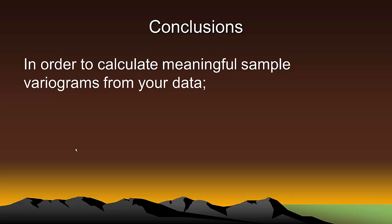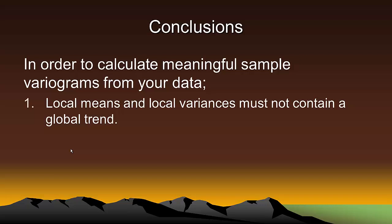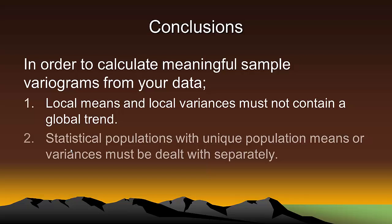So let's conclude this video then with a couple of points. In order to calculate meaningful sample variograms from your sample data, the local means and local variances must not contain a global trend. And two, any mixture of statistical populations with unique population means or variances must be dealt with separately. I will show how to deal with trends in a subsequent video called Working with Difficult Data. That's it for this video. Thank you.